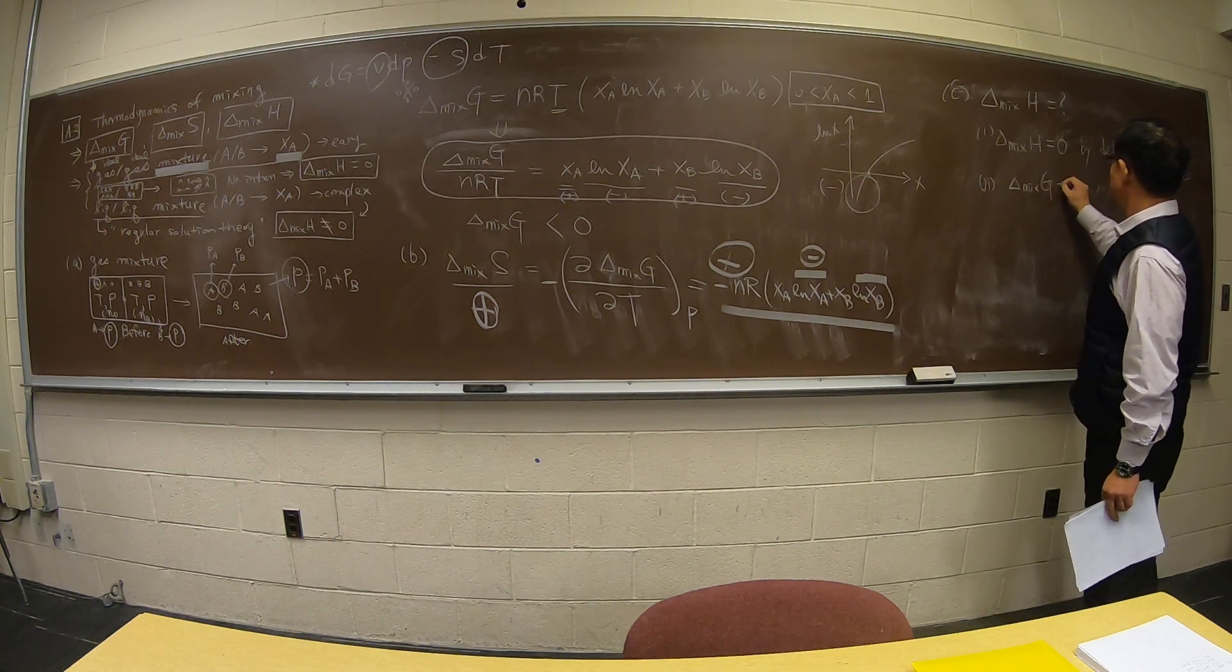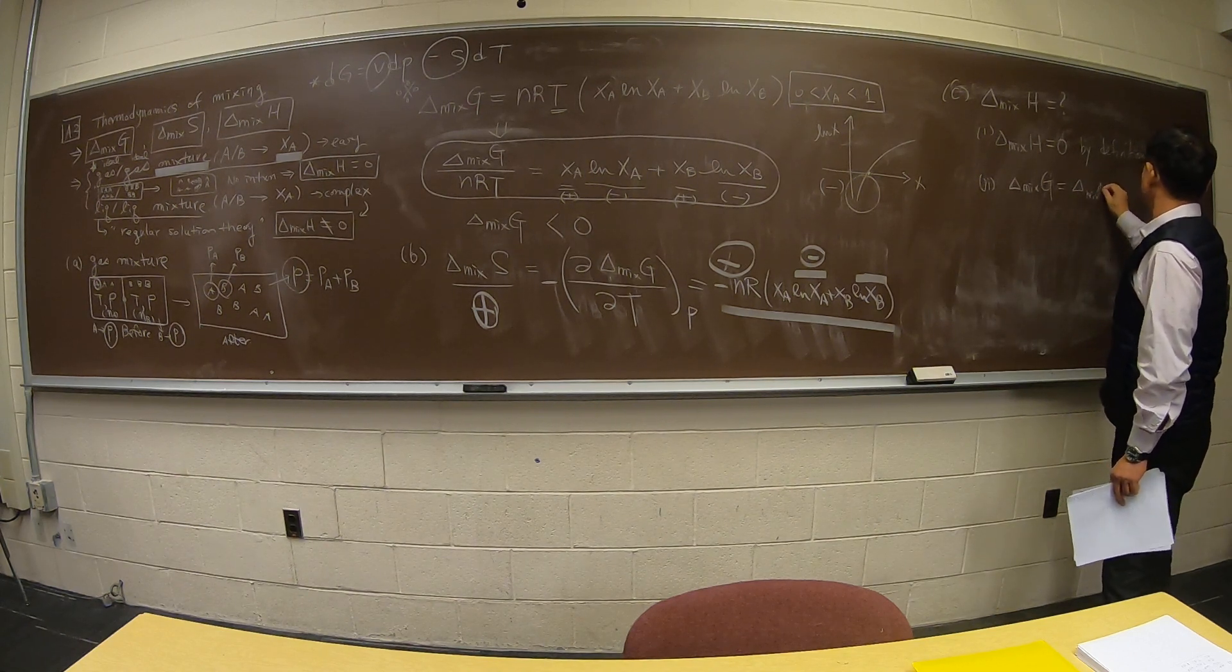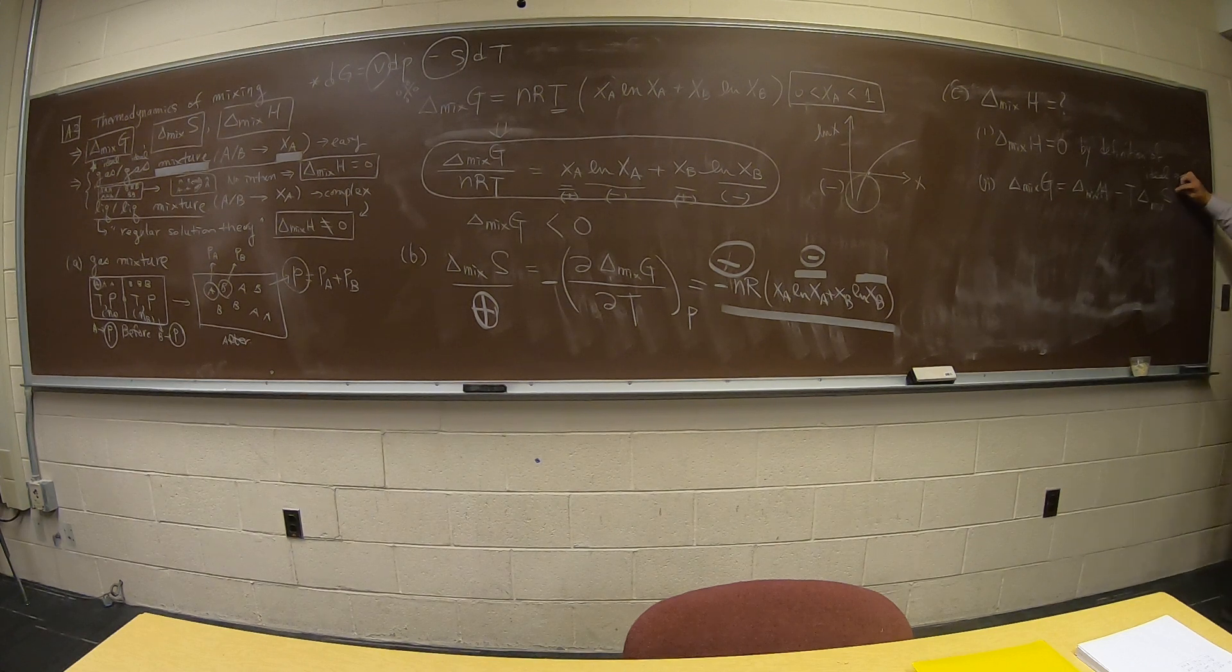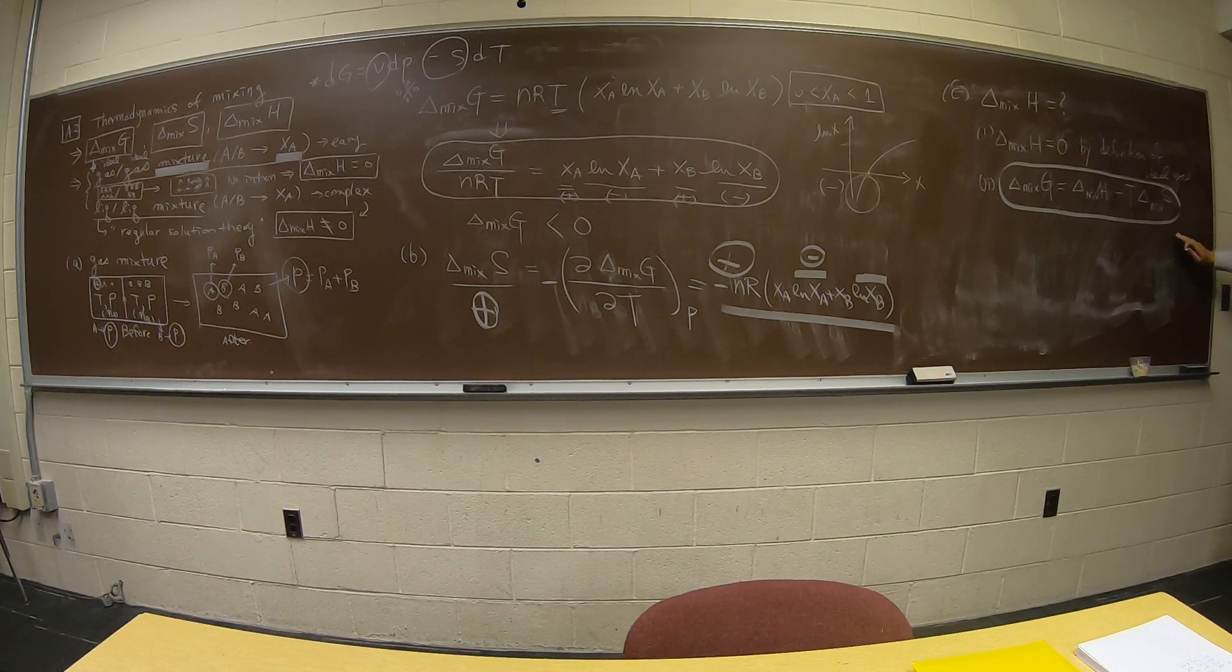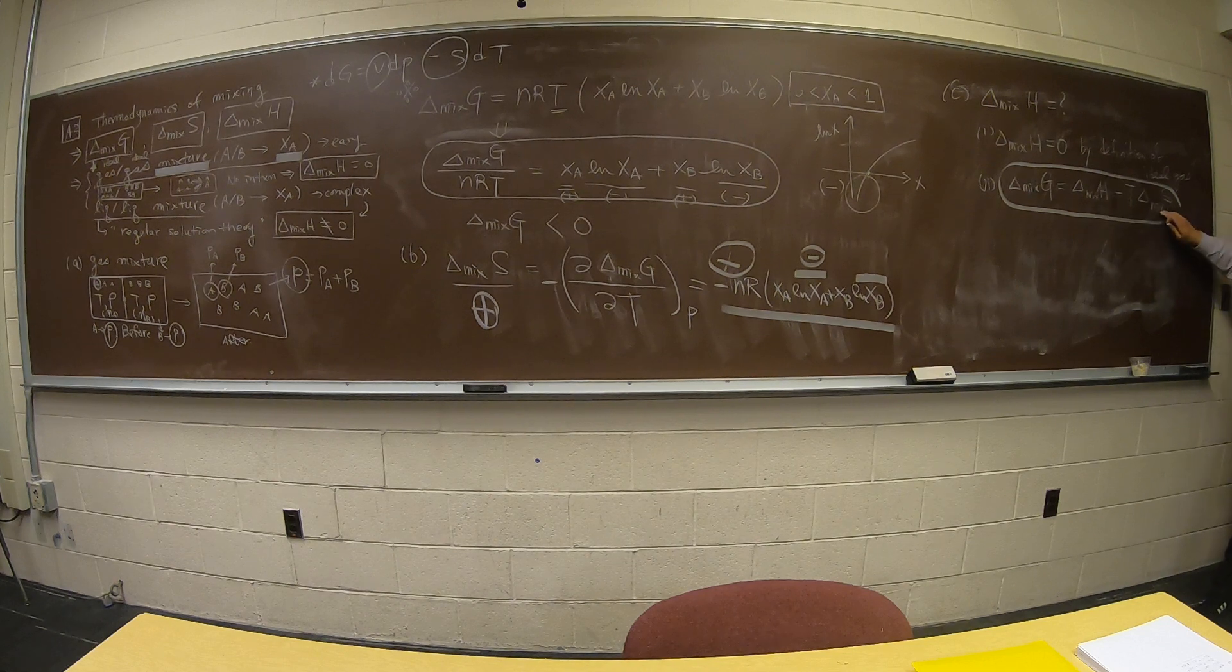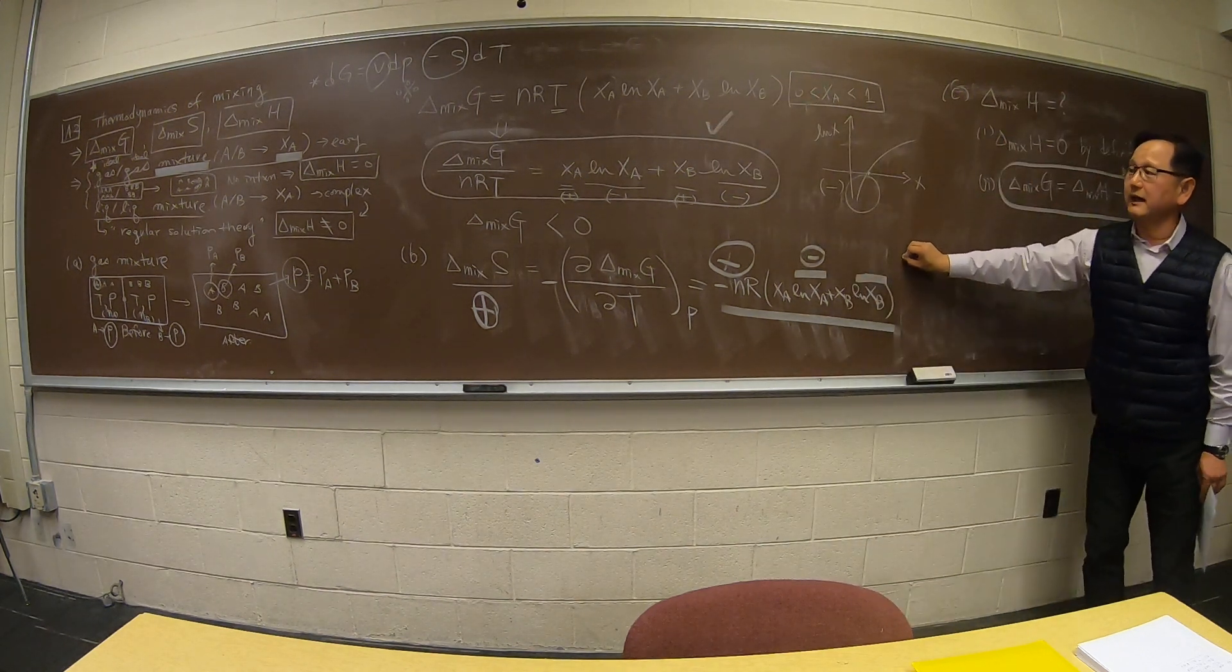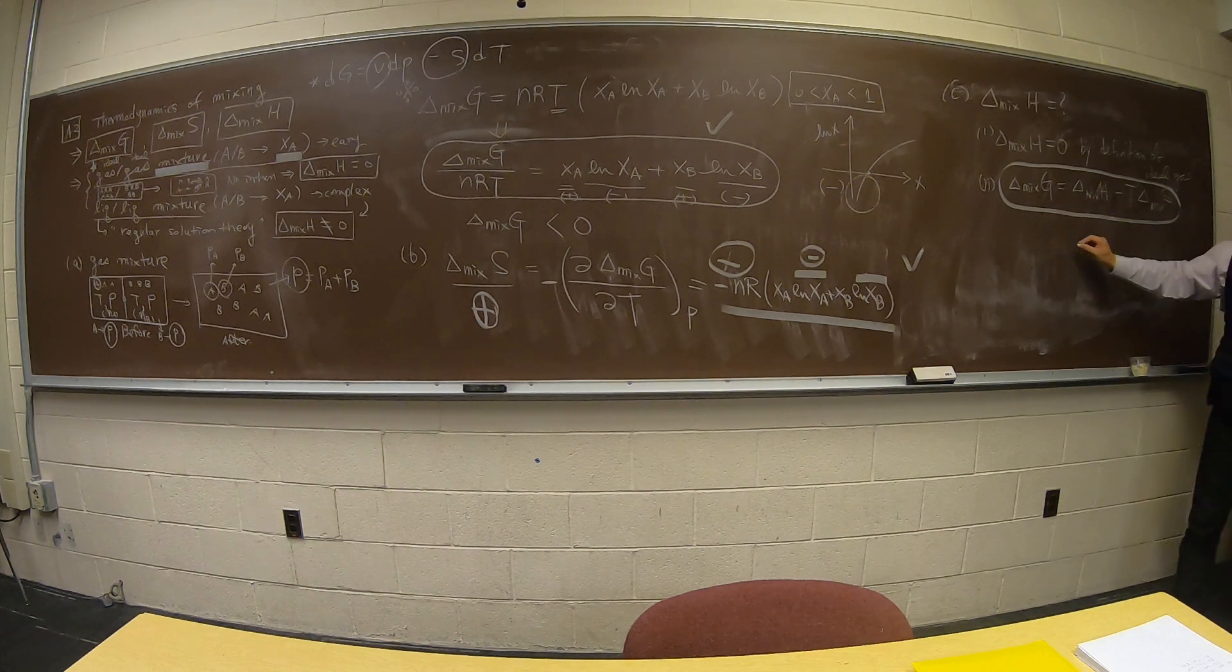Delta G mix is delta H mix minus T delta S mix. So this is also the equation that, for a given temperature, shows how delta G is related to delta H and delta S. And now you are using this equation for delta G mix. The equation for delta S mix - if you plug that in, you will see that delta H mix is zero.